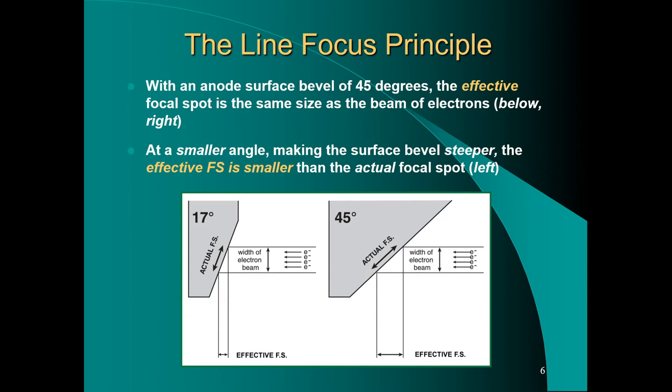As shown in this diagram here, if the anode bevel were 45 degrees, the actual projected stream of electrons would be as wide as the effective focal spot. But at smaller angles the anode surface bevel is steeper and the effective focal spot is smaller.